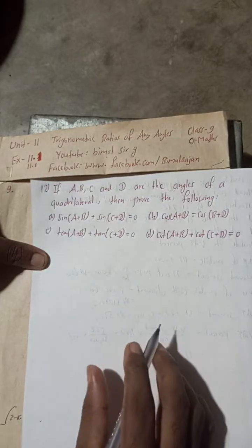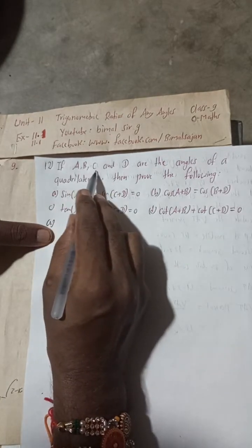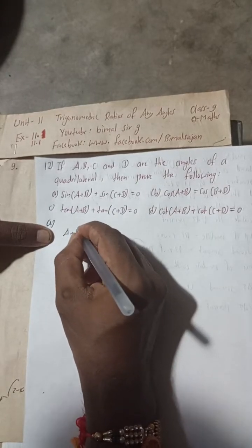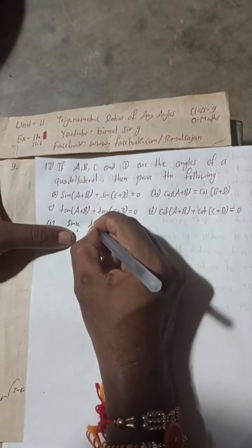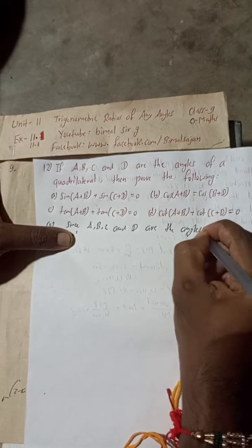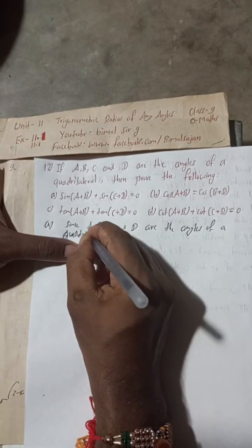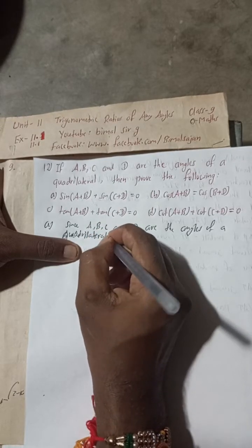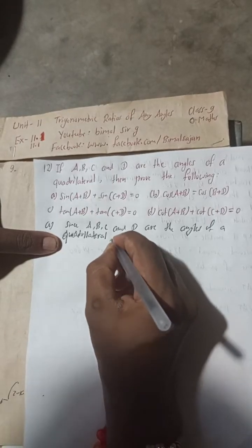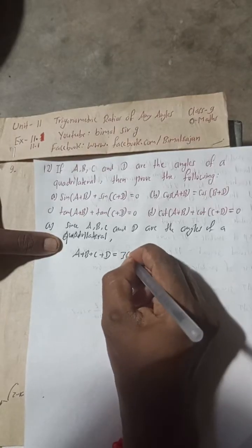I am going to solve all parts A, B, C, D using this key identity. Since A, B, C and D are the angles of a quadrilateral, it means angle A + B + C + D = 360 degrees.